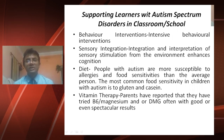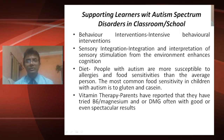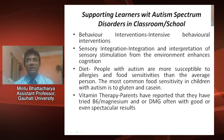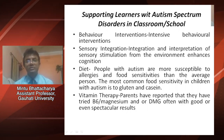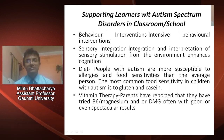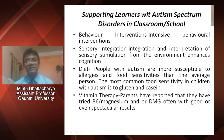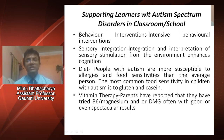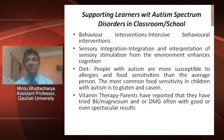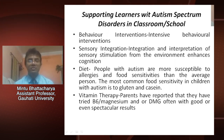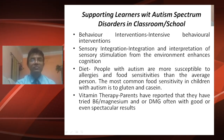Supporting learners with autism spectrum disorders in classroom and schools also involves behavior intervention, with intensive behavioral interventions required. Sensory integration — the integration and interpretation of sensory stimulation from the environment — enhances cognition. Diet is also important, as people with autism are more susceptible to allergies and food sensitivities, most commonly to gluten and casein. Vitamin therapy, including B6, magnesium, and DMG, has also been reported by parents to yield good or even spectacular results.